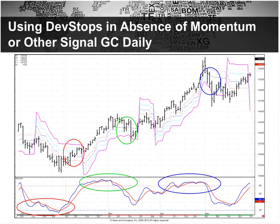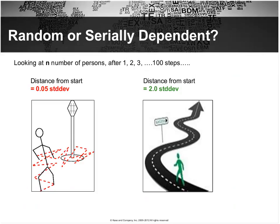Here's an example where the stochastic didn't give a momentum divergence signal — no exit signals to tell the trader to exit here, here, or here. The trader was relying purely on the stochastic. Here's a dev three exit, a dev three exit, and a dev three exit. Now we'll move on and talk about the Case momentum indicators.